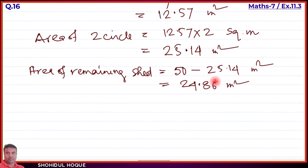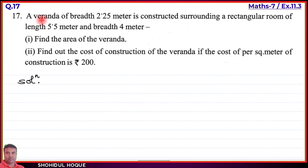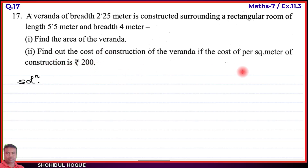Question number 17: A baranda of breadth 2.25 m is constructed surrounding a rectangular room of length 5.5 m and breadth 4 m. Part 1: find the area of the baranda. Part 2: find the cost of construction of the baranda if the cost per square meter is Rs. 200.